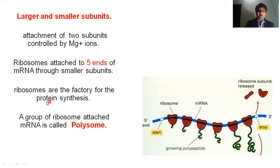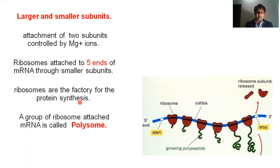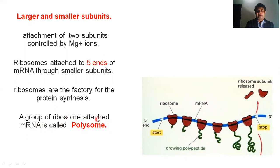Ribosomes are the factory for protein synthesis. When ribosomes come into action in the cell, they make protein. A group of ribosomes attached to the same messenger RNA is called polysomes. This is very important information.